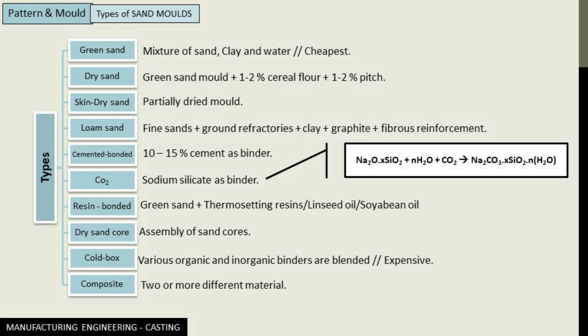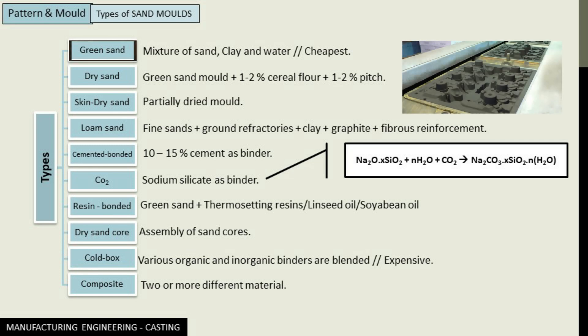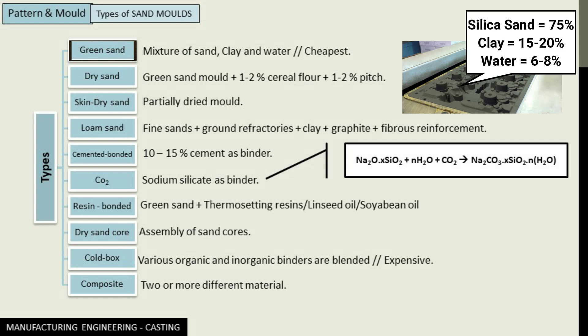The first type of such sand mold is what we call a green sand mold. A green sand mold is composed of a mixture of silica sand, clay, and water. Silica sand constitutes 75% of the total composition of green sand mold, clay has 15 to 20% of composition, and water constitutes 6 to 8% amongst silica, clay, and water.